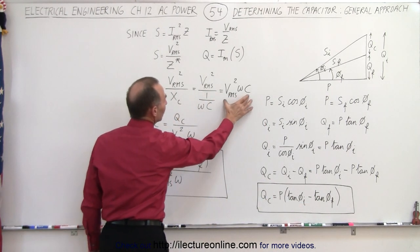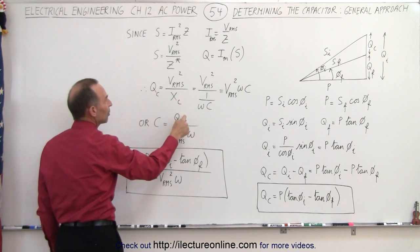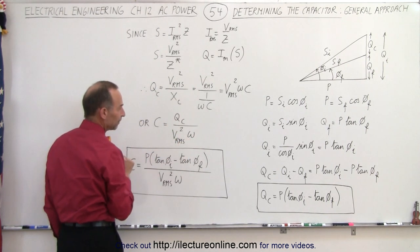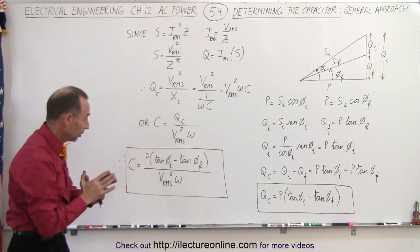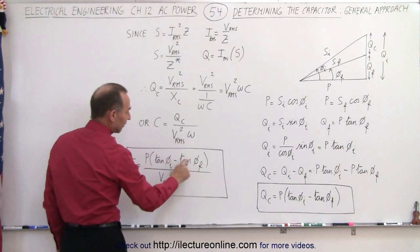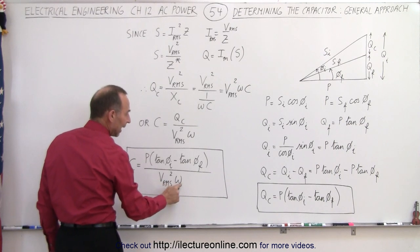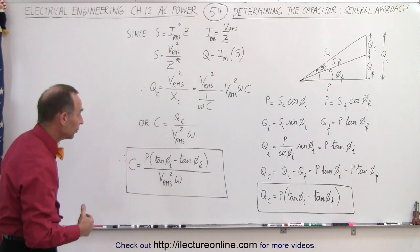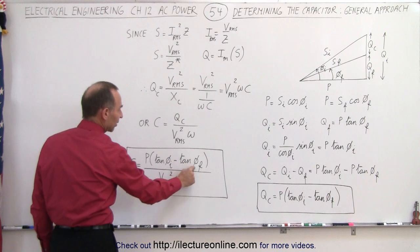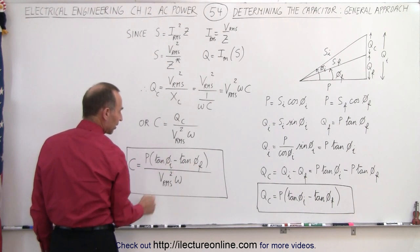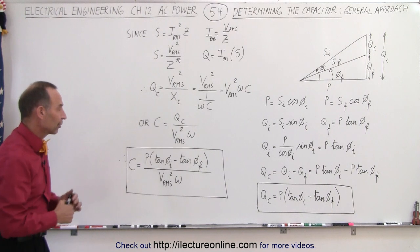Now that we have Q_c expressed in two ways, we solve for C. The capacitance equals Q_c divided by V² times ω. Substituting Q_c equals P times (tan θ_i minus tan θ_f), we have the capacitance required to achieve a new phase angle given the old phase angle, the power of the inductive circuit, the voltage supplied V_rms, and ω, the frequency of the AC current supply.